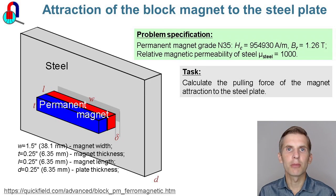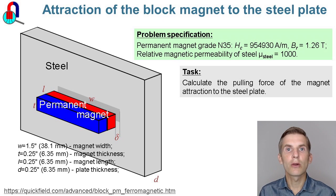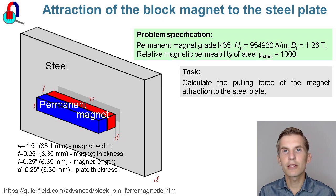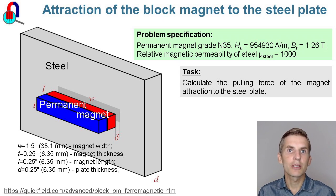Attraction of the block magnet to the steel plate. A block-shaped permanent magnet is pulled towards the steel plate, and the task is to calculate the force. This could be a bit tricky in QuickField because to calculate the force you should surround the body with the integration contour, and to get accurate results you should keep some distance between the contour and the body's boundaries. But there is no distance between the magnet and the steel plate, so I am going to place the magnet a very small distance away and also demonstrate the virtual work approach.